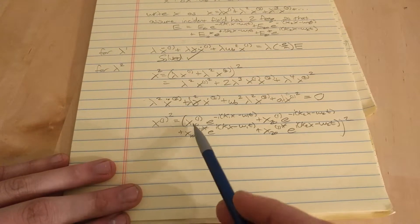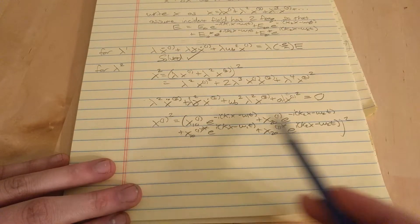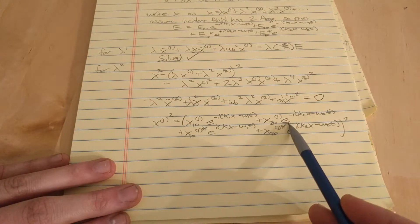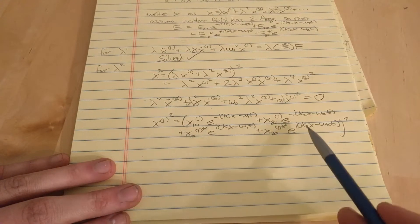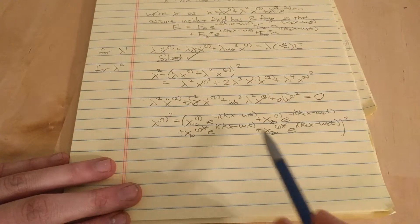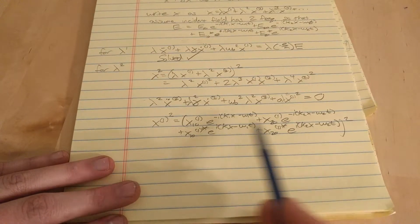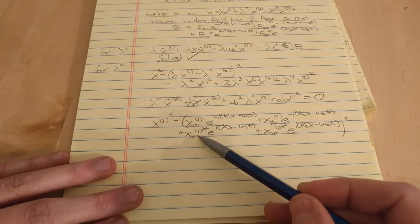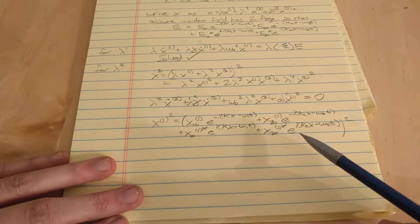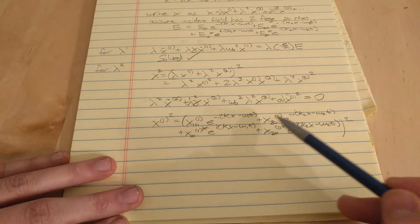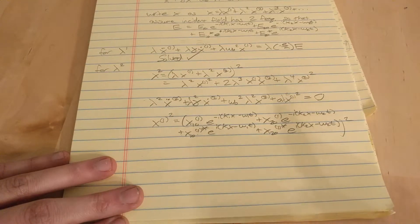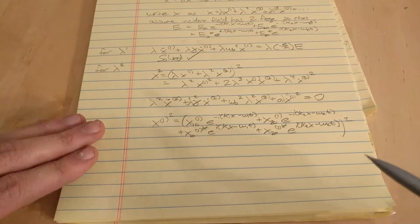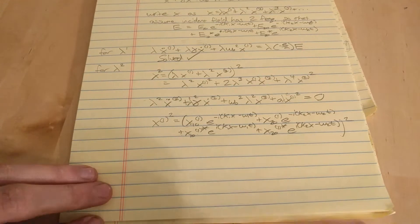When we foil out, we're going to get this term squared, this term squared, this one squared, and this one squared. But that's just the complex conjugate of those, so we're not writing the bottom ones squared. There's this times this, this times this, and this times this.